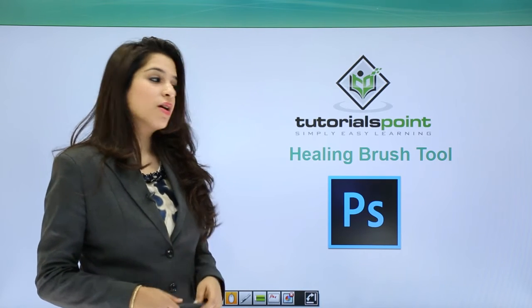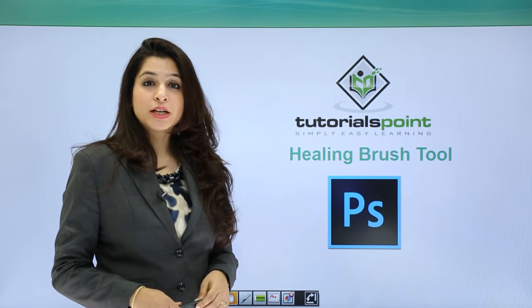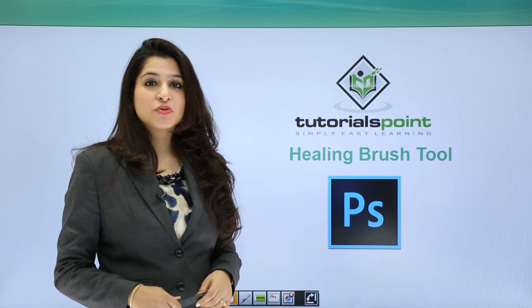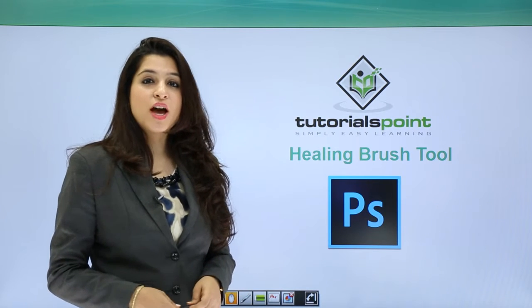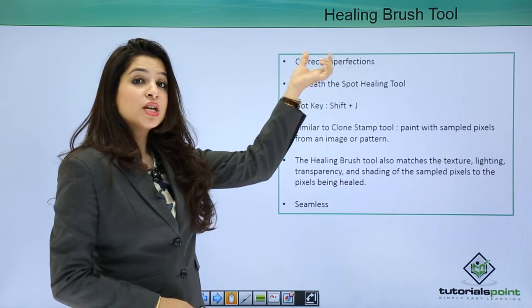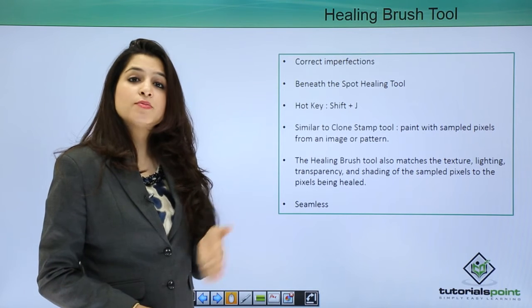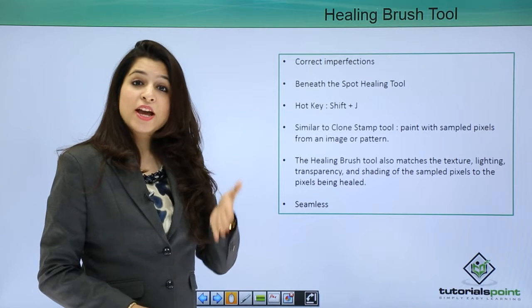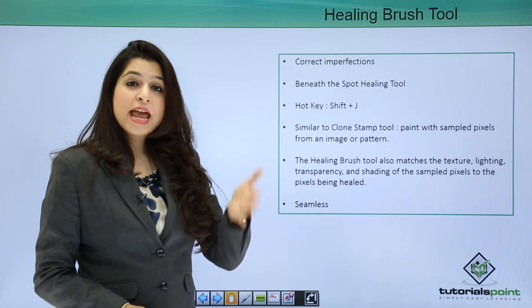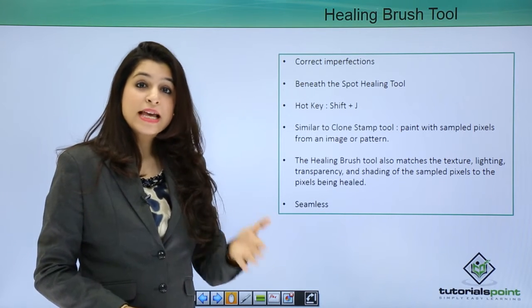In this tutorial we will talk about the Healing Brush Tool. You will find this tool just beneath the Spot Healing Tool, and to activate it you just press Shift+J. The Healing Brush Tool is used for correcting imperfections. The Spot Healing Brush also does this, but that tool automatically gets textures and colors from areas around the blemish. Here, we are manually sampling areas and painting over our imperfections.